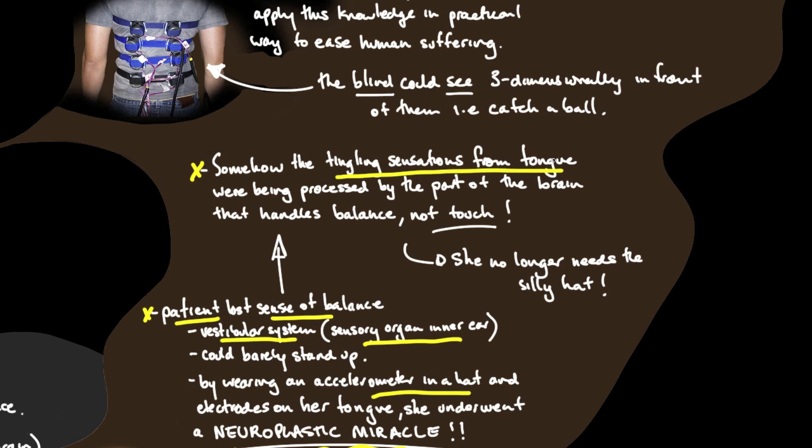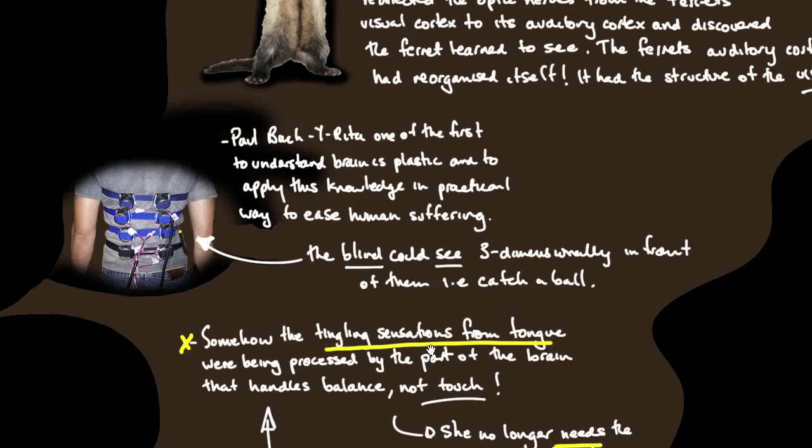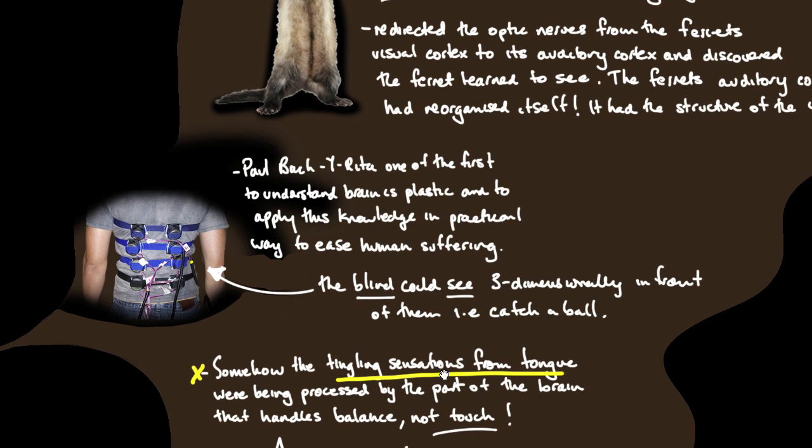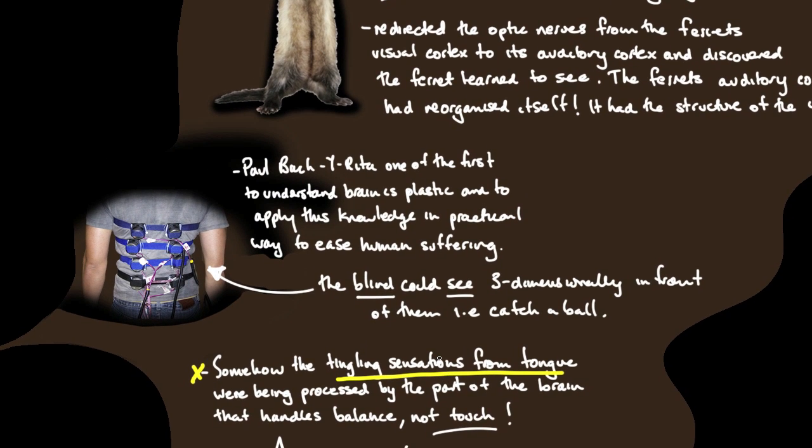The brain started taking that input and processing it as balance information, so this person could learn to stand, run and walk. The tingling sensations from the tongue were being processed by the part of the brain that handles balance, not touch. She no longer needs to wear this hat. If that's not miraculous, I'm very short on what miraculous is.